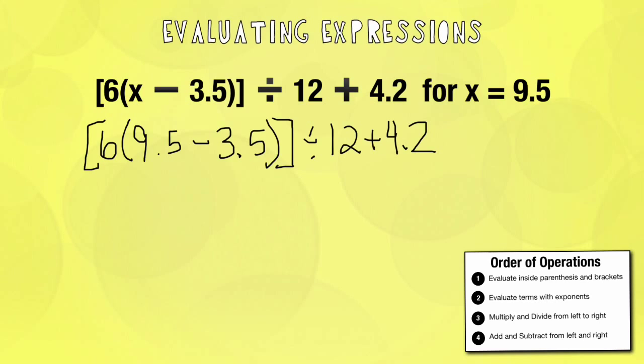Okay, so when you see that, that's what you want to think of it as. That being said, you want to do whatever's in the parenthesis first. We're doing 9.5 minus 3.5, which gives me a 6. Then I'm going to divide by 12 plus 4.2. Okay, 6 times 6 is 36 divided by 12 plus 4.2.